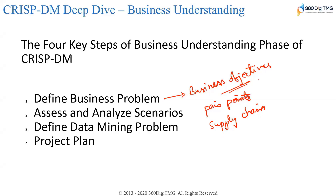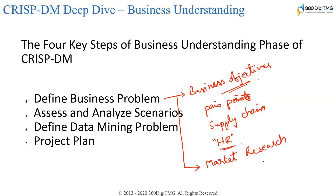For example, too many employees are resigning — you are solving the problem only for the HR department. You also do a market research to understand what kind of solutions already exist, what is lacking in those solutions, and what needs to be improved. Do not reinvent the wheel — the majority of problems are already solved. If they are not solved, they would be part of research projects.